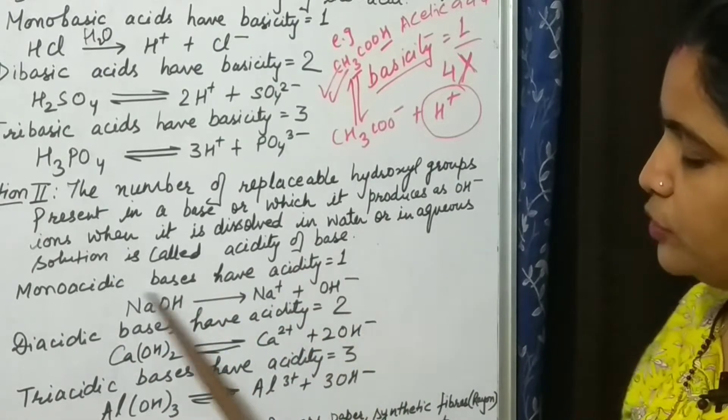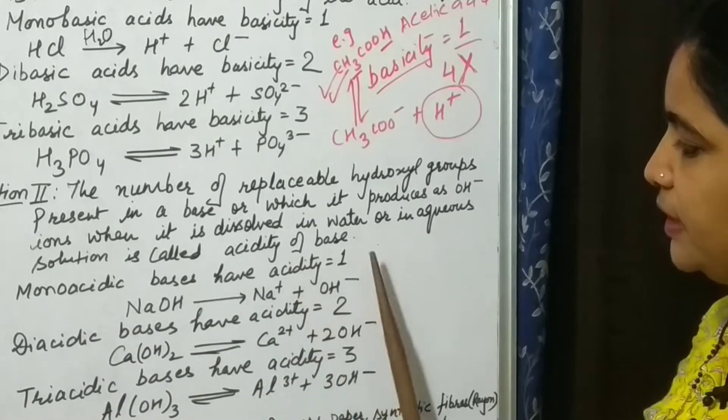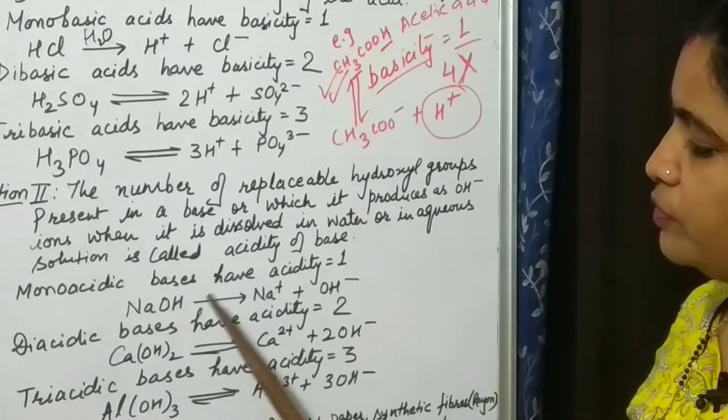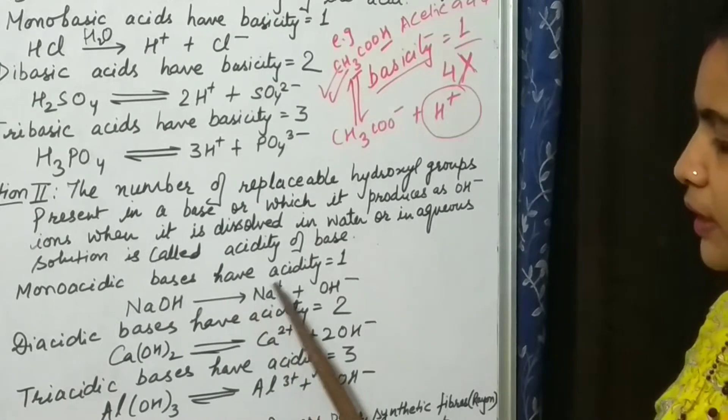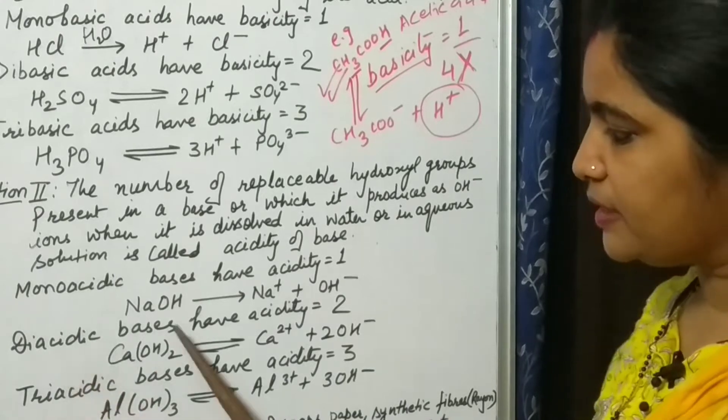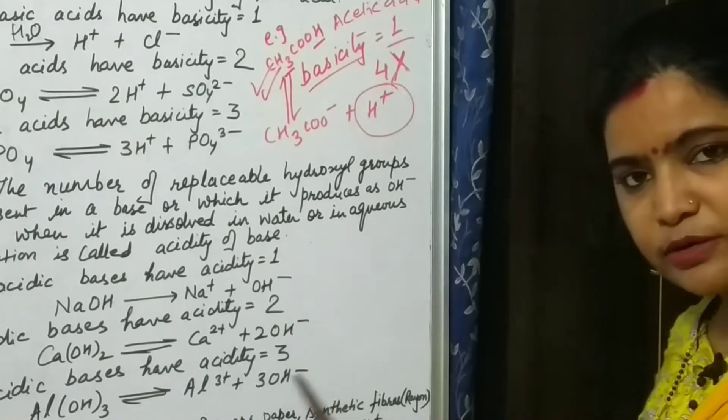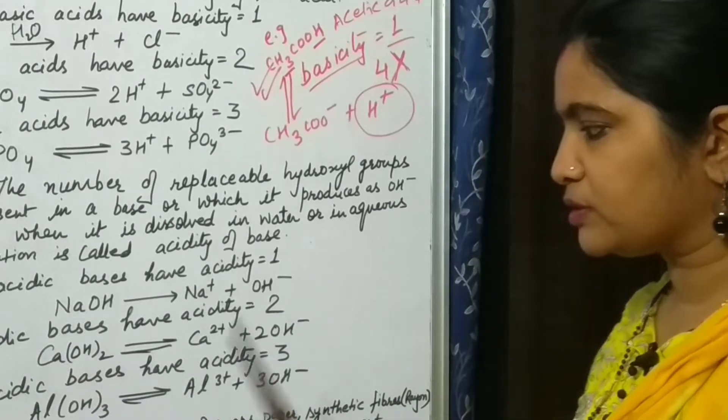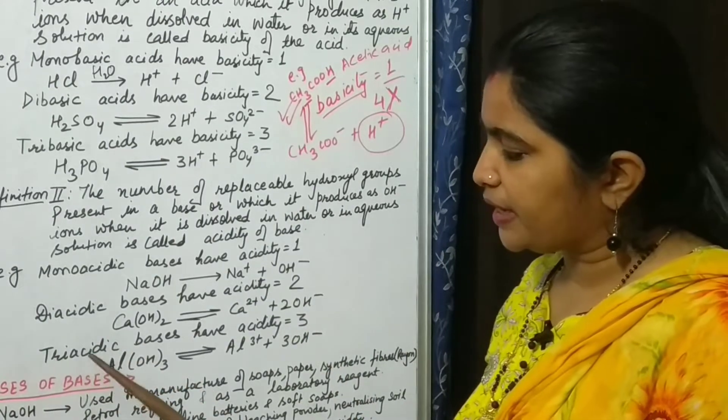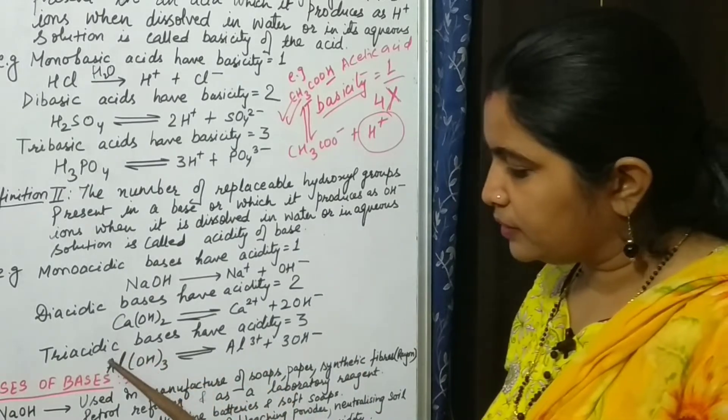First we can see here monoacidic bases have acidity one. Mono means single, one. So here we could see that NaOH when it ionizes will produce only one hydroxyl ion. In case of diacidic bases, acidity will be two because they will liberate two hydroxyl ions. See here, in case of calcium hydroxide, calcium produces two hydroxyl ions. Similarly, in triacidic bases they have acidity three. So here aluminium hydroxide will produce three hydroxyl ions in aqueous medium.